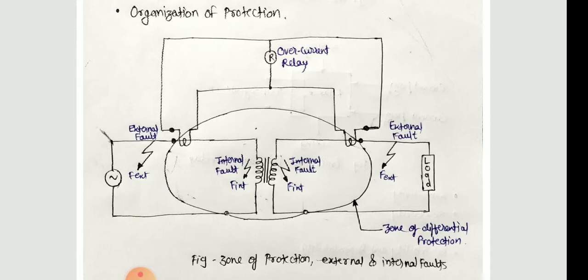External faults are also known as through faults. Ideally, a relay looking after the protection of a zone should operate only for internal faults. It should restrain from operating for external faults.